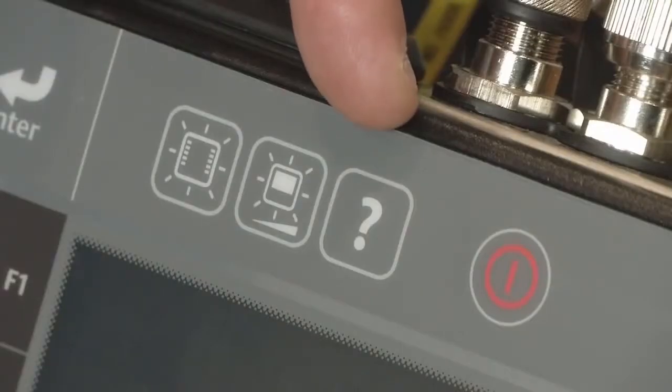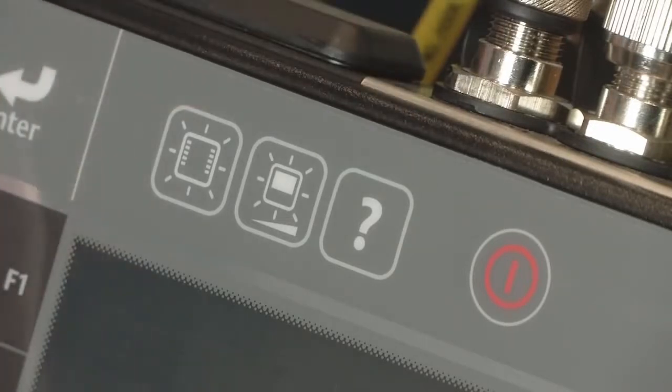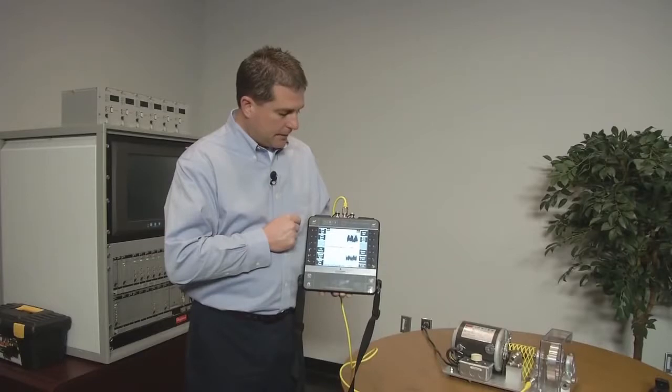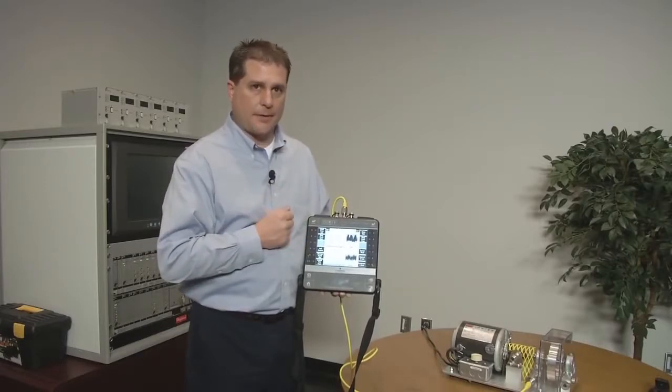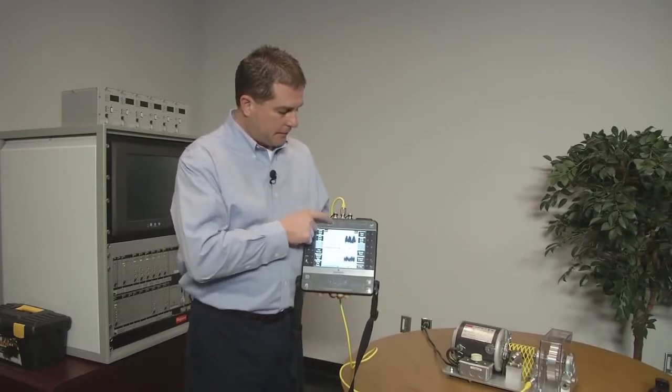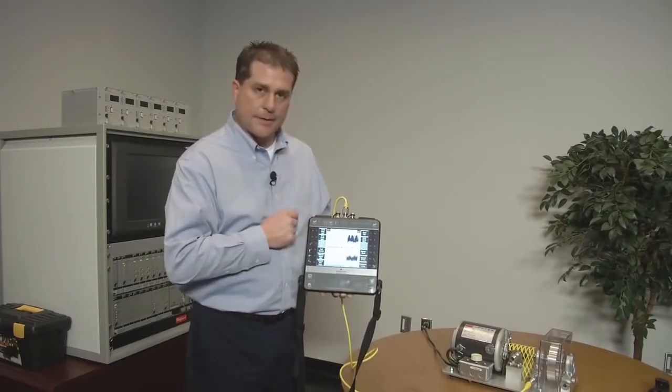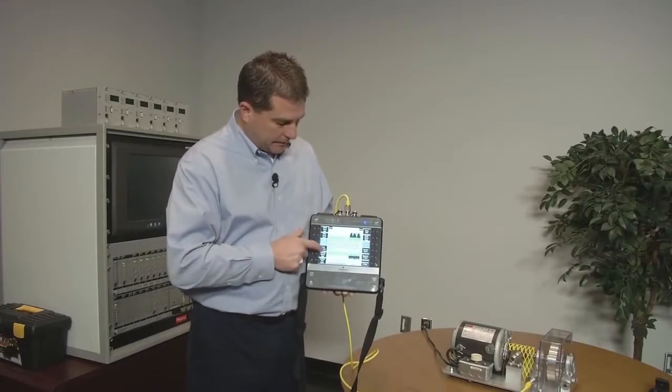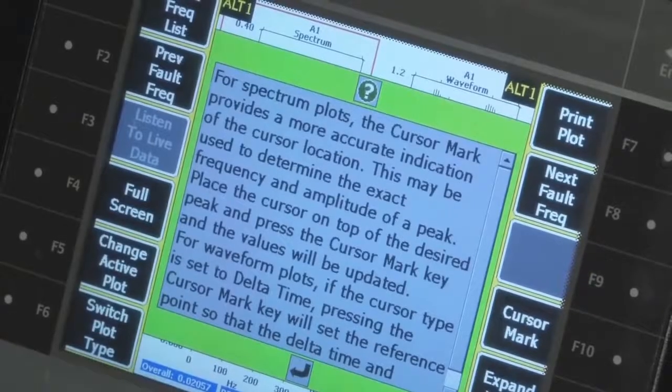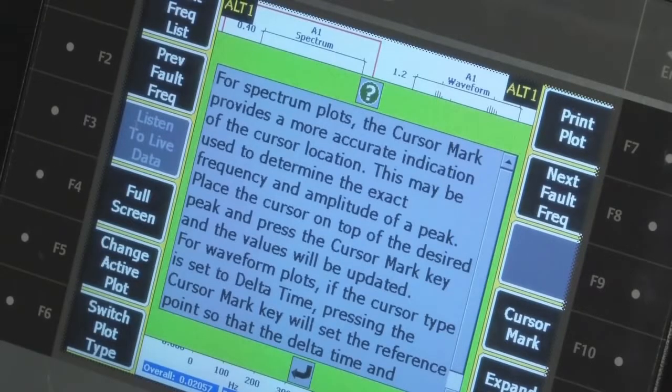The third button on the top here is the question mark, the symbol for help. Any button on the unit, you can get onboard help. It's almost like a user's manual on the unit. If you get in the field and you're not sure what one of these buttons may do, then you could press the question mark and press any button. And then an explanation of what that function or button does comes up.